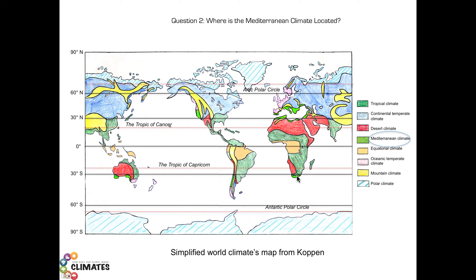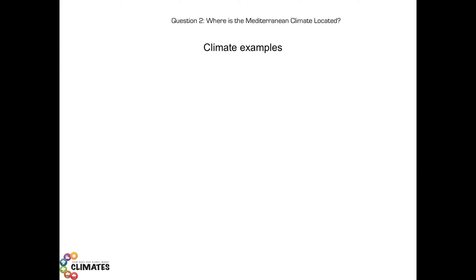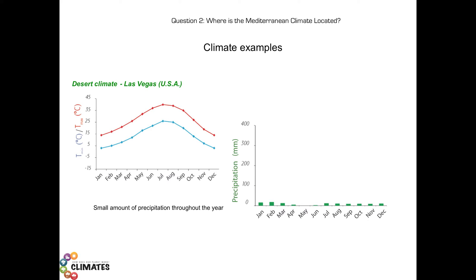I will give you a few characteristics for some of these climates without going into too many details. If we consider the desert climate, in red on the map — this climate is characterized by a small amount of precipitation throughout the year. Look at the two graphs here. The graph on the left shows temperatures for each month of the year: minimum temperatures recorded every 24 hours in blue, as a monthly average, and maximum temperatures recorded every 24 hours in red, also as monthly averages. The graph on the right shows the quantity of precipitation in millimeters for each month of the year.